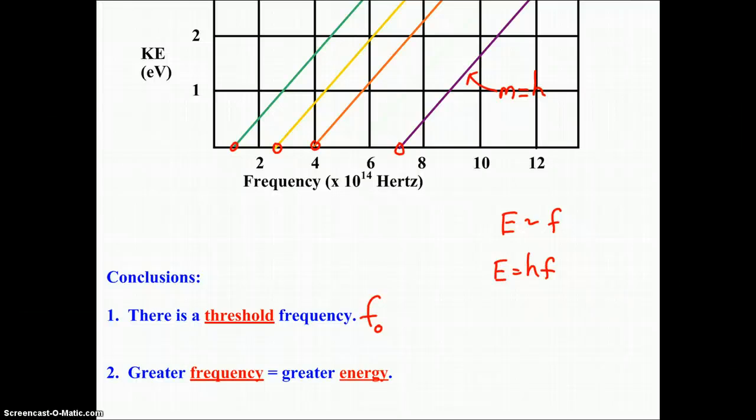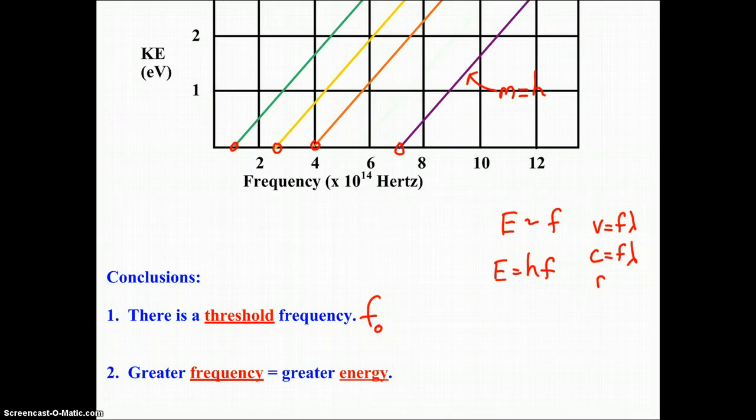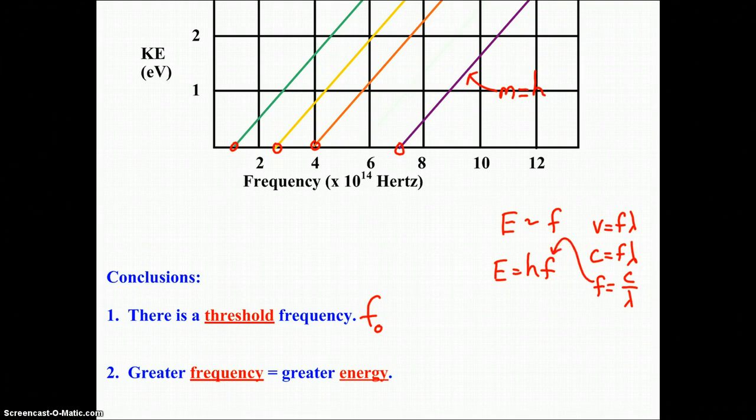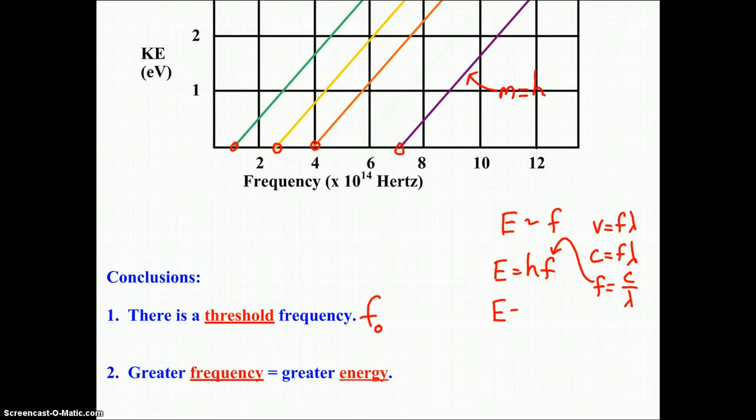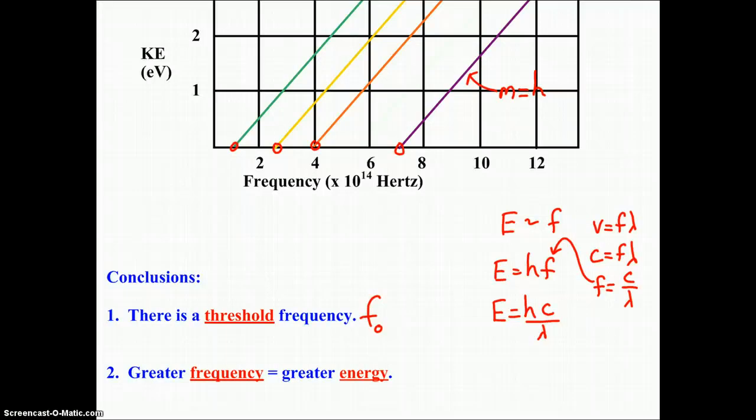So h is the proportionality constant that allows us to equate E and f into an equation that's E equals hf. You also may see this equation in a different form. If we take the wave equation v equals f lambda, which if we apply that specifically to light would be c equals f lambda, and if we solve that for f, that of course would be c divided by lambda. And if we took that value of f and substituted for f in E equals hf, this would become E equals hc over lambda.